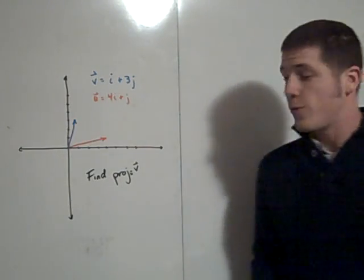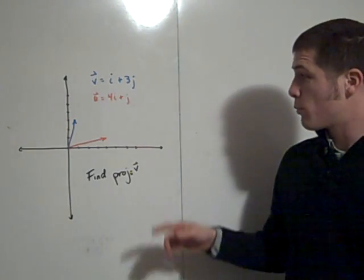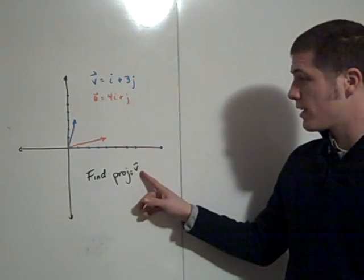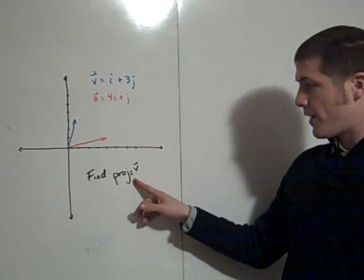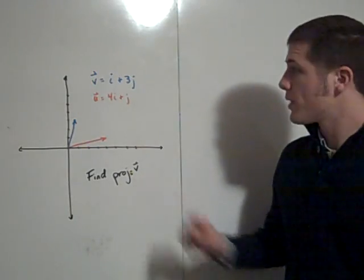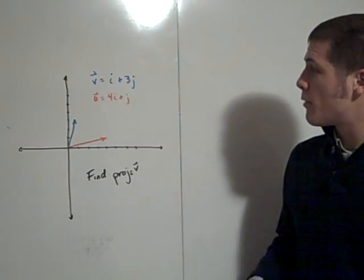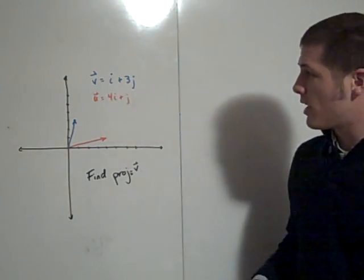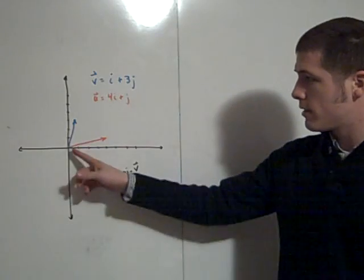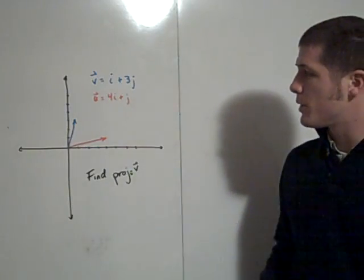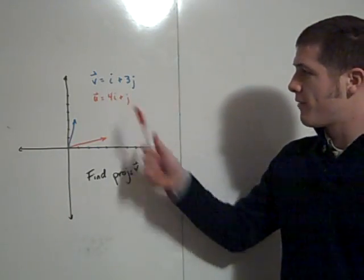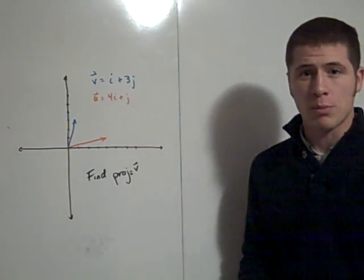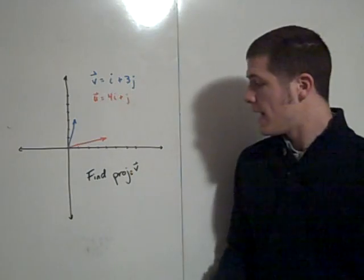We're going to find the projection of vector v onto vector u, where v is i plus 3j — shown in blue — and the vector u is 4i plus j.